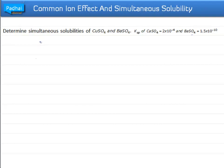Let us first write the equilibrium equations. For CuSO4, it would be Cu²⁺ plus SO4²⁻.